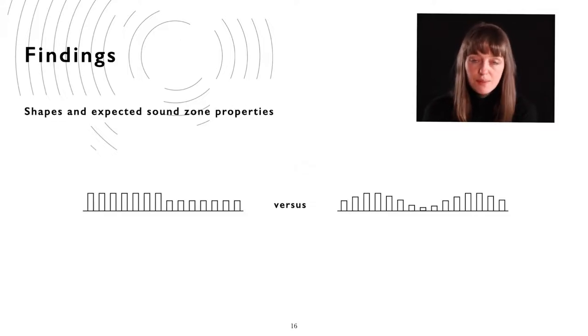Then we found that participants expected the sound zone to have different properties according to different shapes. For the curved shape, for example, they expected the sound to fade slowly from the center of the zone, but for block shapes, they expected the sound to be very contained in a more clearly defined area. When the display was divided into two sections, 14 participants expected the sound of each zone to distribute equally out in the visualized area.